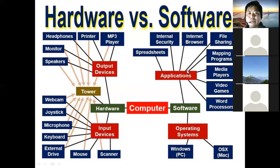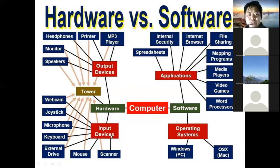And we have applications — spreadsheet, internet security, internet browser, file — all of them are part of the software. In hardware, there is an output device, an input device, and a CPU.